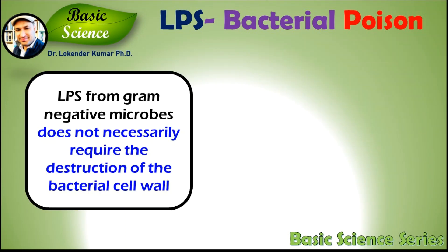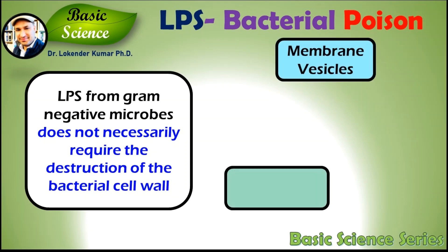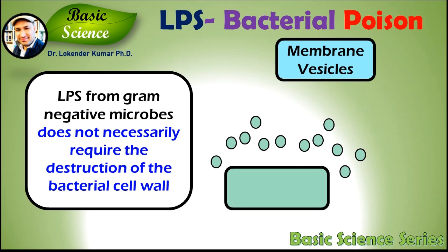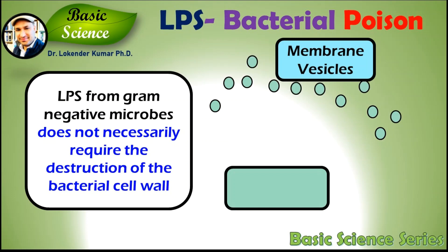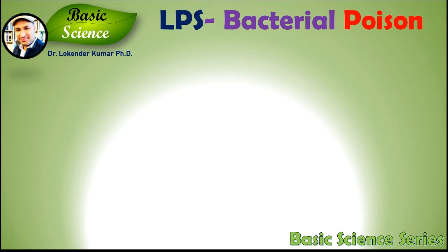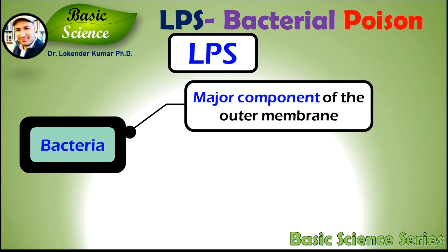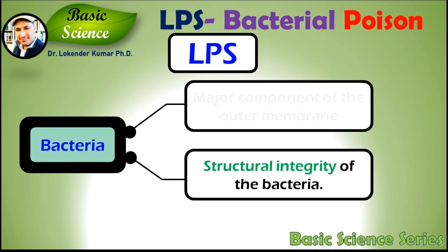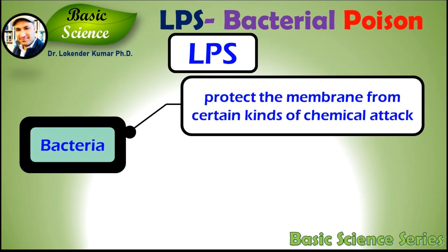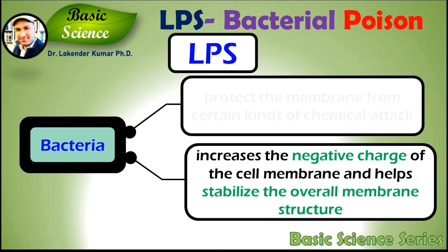Subsequent work showed that the release of LPS from gram-negative microbes does not necessarily require the destruction of the bacterial cell wall, but rather LPS is secreted as part of normal physiological activity of membrane vesicle trafficking in the form of bacterial outer membrane vesicles. LPS is the major component of the outer membrane of gram-negative bacteria, contributing greatly to the structural integrity of the bacterial cell. LPS protects the membrane from certain kinds of chemical attack, also increases the negative charge on the cell membrane, and helps to stabilize the overall membrane structure of the cell.